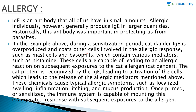These cells are capable of leading to an allergic reaction on subsequent exposures to the cat allergen. The cat protein is recognized by the IgE, leading to the activation of these cells and the release of allergic mediators. These chemicals cause typical allergic symptoms such as localized swelling, inflammation, itching, and mucus. The immune system is capable of mounting this exaggerated response with subsequent exposures to the allergen.